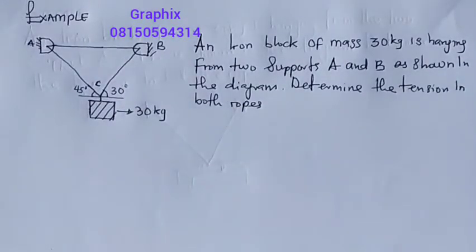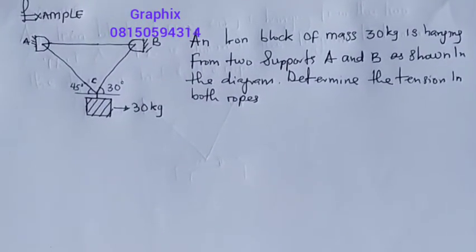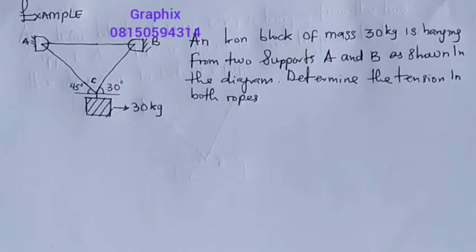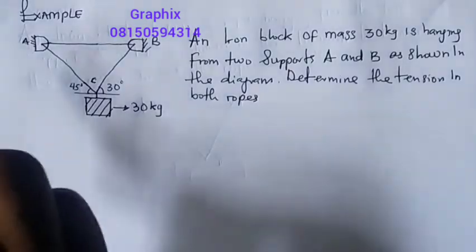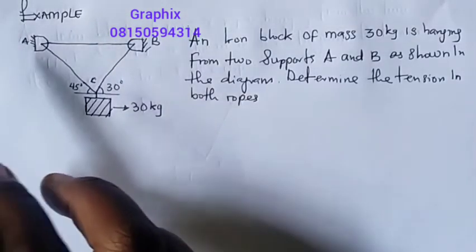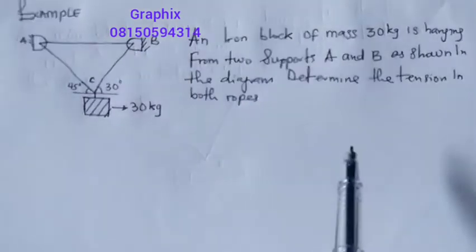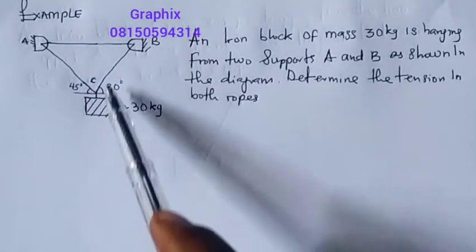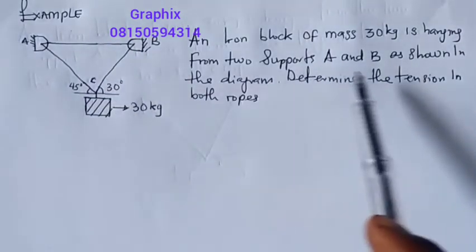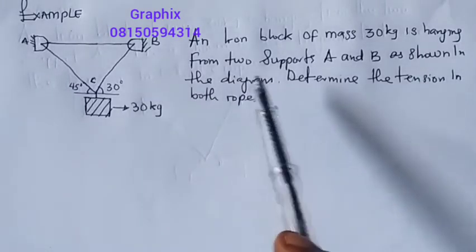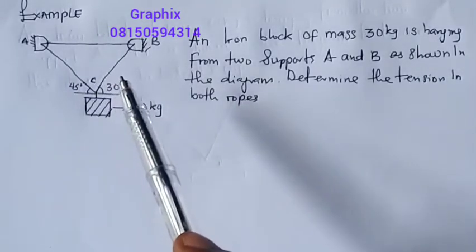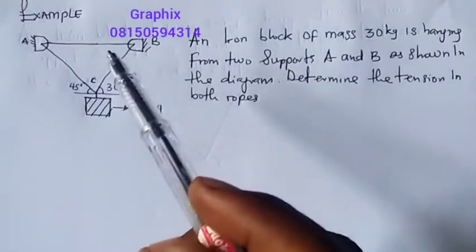Good day everyone, my name is Graphics. Today we'll be looking at this example under Lami's theorem. The example says that an iron block of mass 30 kilograms is hanging from two supports — support A and support B — with a mass hanging as shown in the figure. Determine the tension of the ropes.